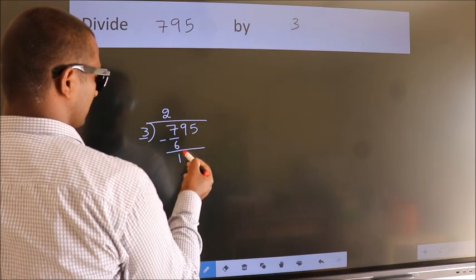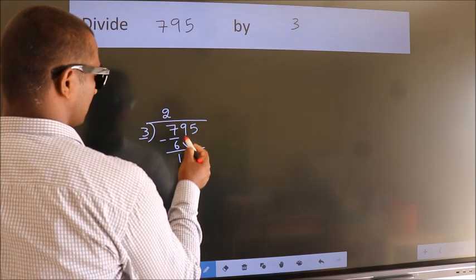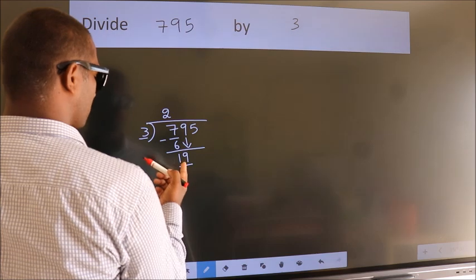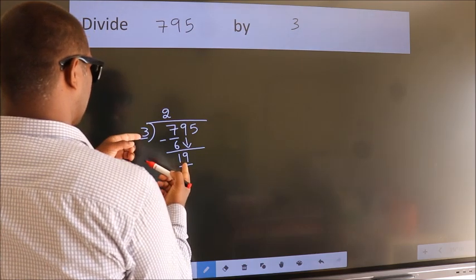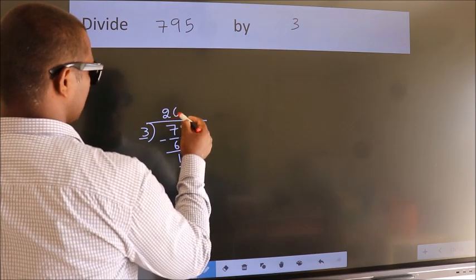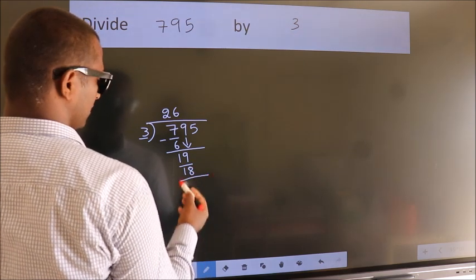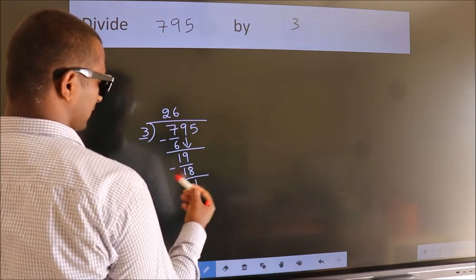After this, bring down the beside number. So, 9 down. So, 19. A number close to 19 in 3 table is 3 times 6 is 18. Now, we subtract. We get 1.